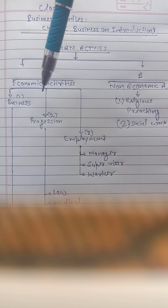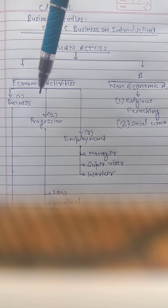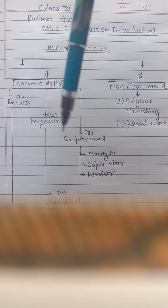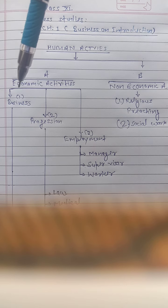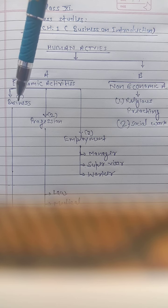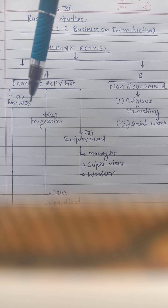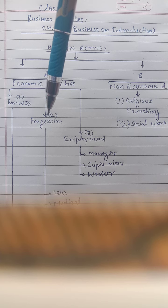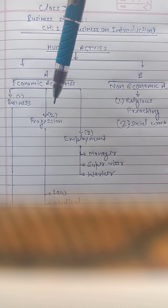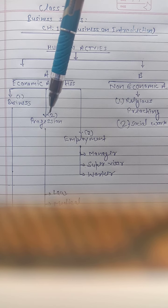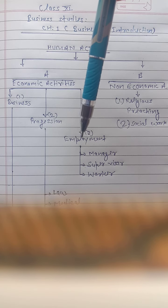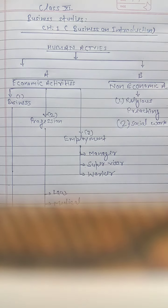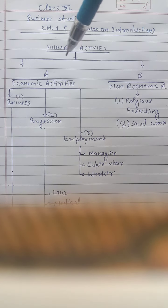Now let us come to economic activities, as these are the big concern of business. Economic activities include three main types: first is business, second is profession — where people earn a salary or profit — and third is employment.